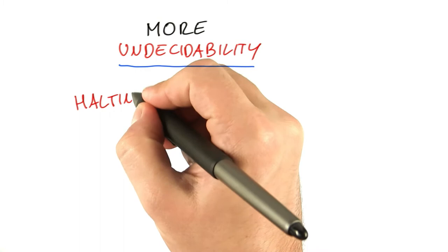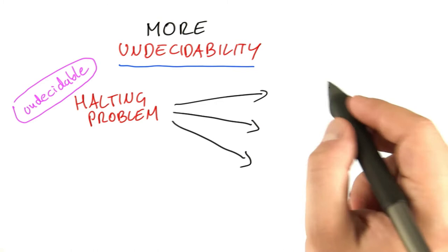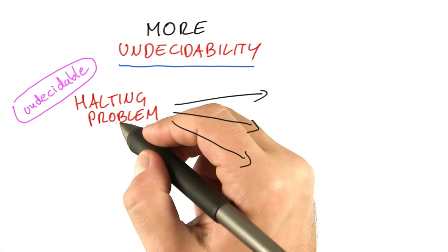Now we know the halting problem is undecidable. We can look at other problems and show through a kind of reduction that if we could solve these problems here, then we would be able to solve the halting problem, which of course is not possible.